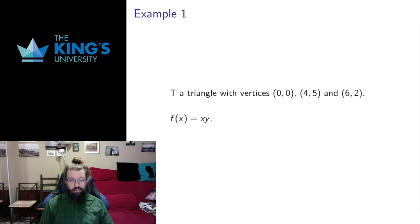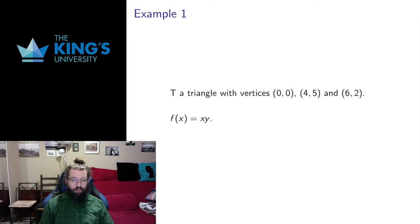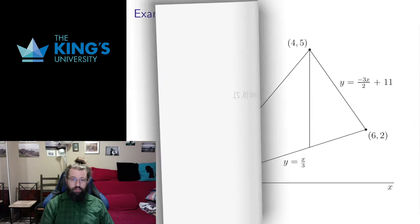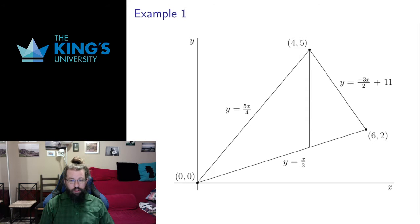First I want to integrate the function x times y over the triangle in R2 with vertices (0,0), (4,5), and (6,2). That's going to be our domain. Our graph lives in R3 — we have two inputs and one output, z is the output function — and we've got some volume underneath the graph over that triangle. So here's the triangle; let me talk through how I'm going to set this up as variable bounds.